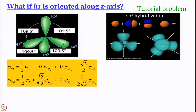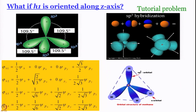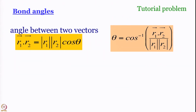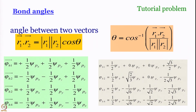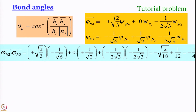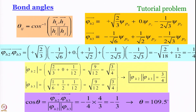Symmetry has a very important role in quantum mechanical problems — we have an NPTEL course on symmetry in chemistry; lectures are available for those interested. The tutorial problem is for you to work out expressions for the third and fourth hybrid orbitals. Also work out the bond angles using the formula we discussed — you will see the bond angle again comes out to be 109.5 degrees.